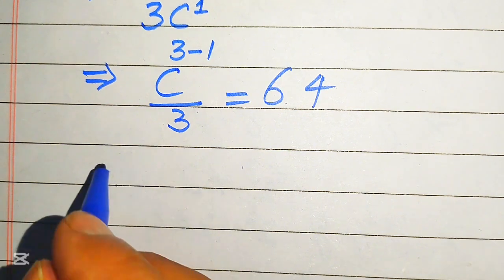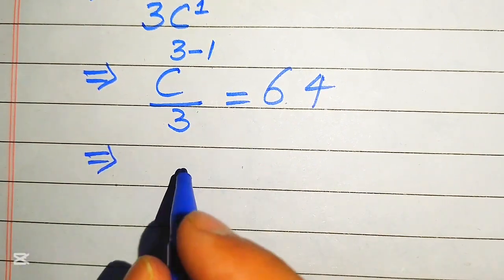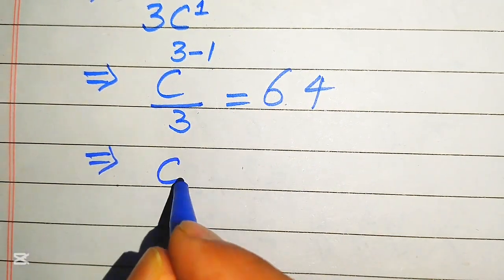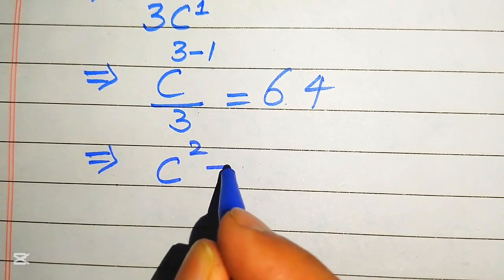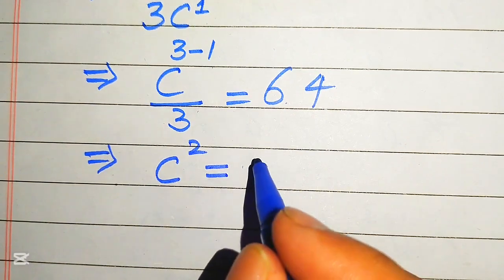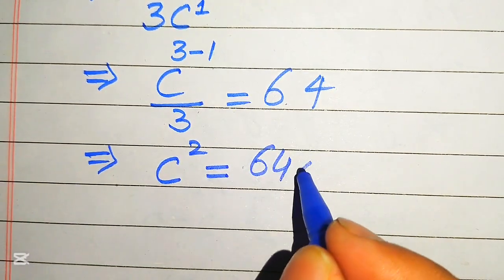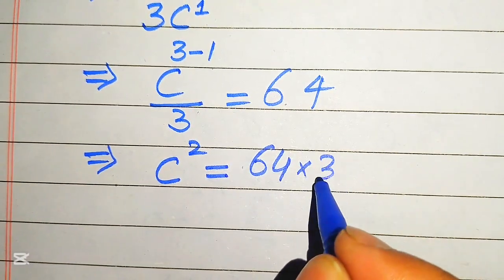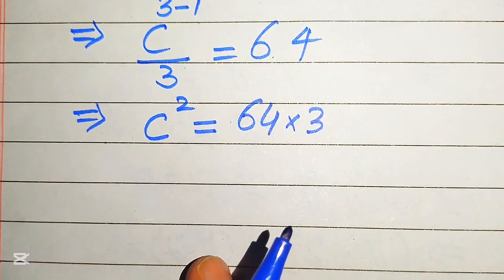In the next step we move the 3 to the right-hand side. On the left-hand side we get c squared equals 64 times 3, which is 192.